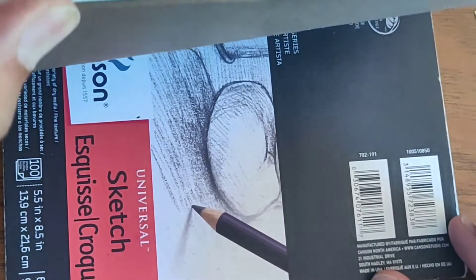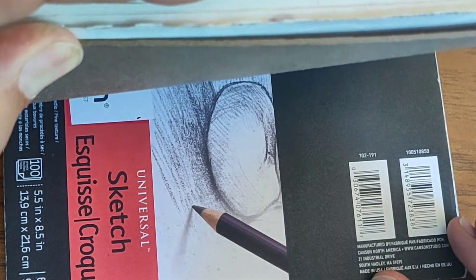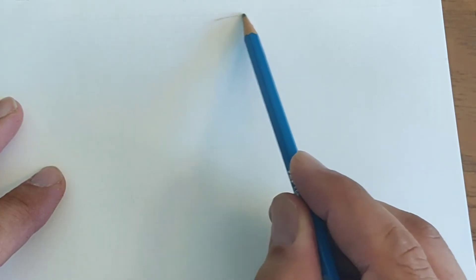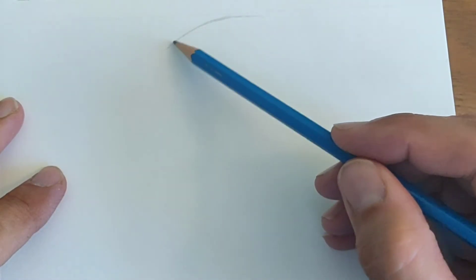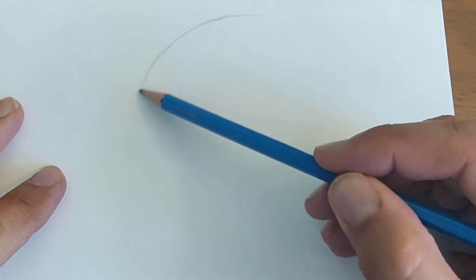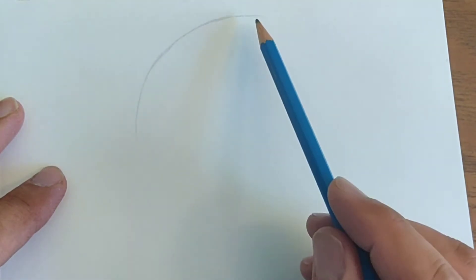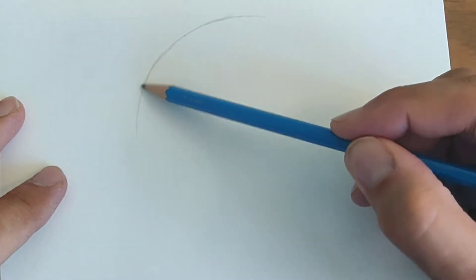So first what we're going to do is just going to make a circle, kind of the full area of this paper that I have here. This is a sketch pad, 5.5 inch by 8.5 size. If you use a bigger one, just try to center your circle and make it as big as you can and still have enough space on the top and the bottom and try to make it proportional.